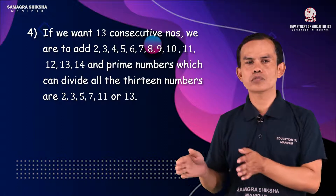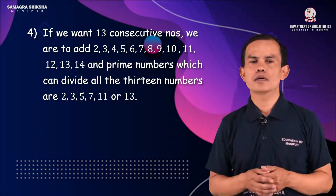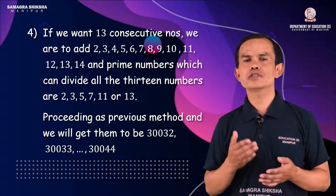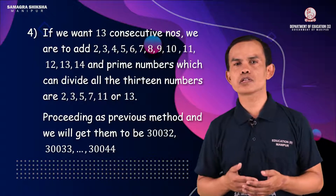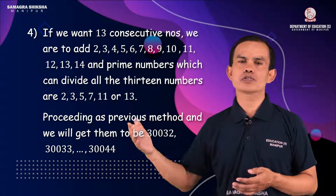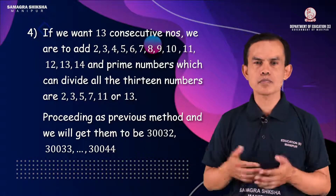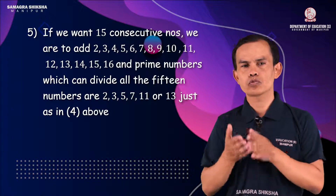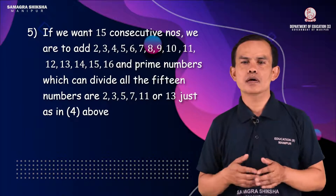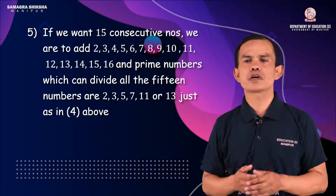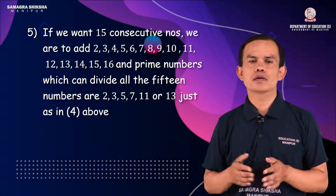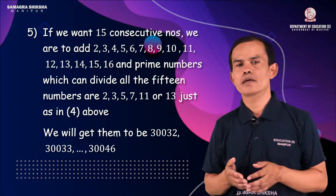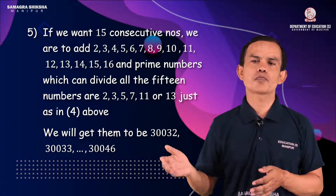A larger example of consecutive composites: 30032, 30033, 30034, 30035 (written as 3004645) — these are also consecutive composite numbers constructed using the same method.